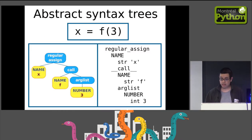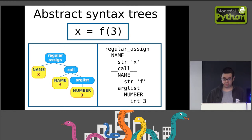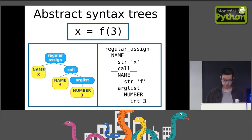We want to write a Python interpreter. The user is going to write commands in a file — something like 'x = f(3)'. We don't want to treat this as a string all the time, so the first thing we want to do is turn it into a data structure more malleable for execution — that's an abstract syntax tree. For this statement, we have as a root a regular assignment node, with first child a name node with value x, and second child a call node which itself has children: a name node f and an argument list node with a single argument, number 3.